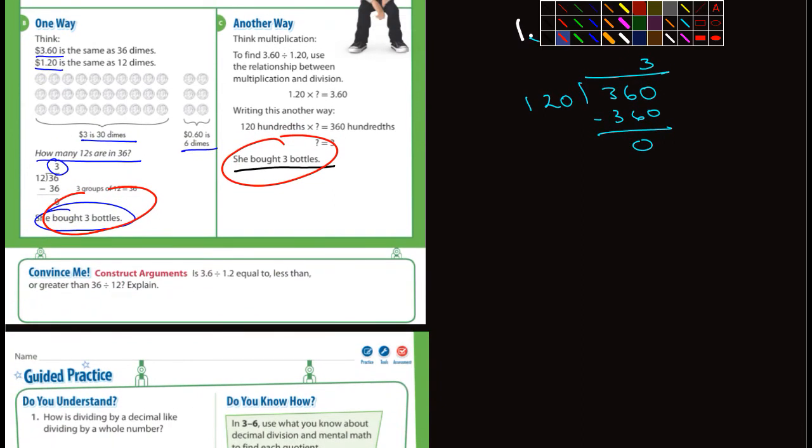Let's drop down to the convince me. It says construct arguments. Is 3.6 divided by 1.2 equal to, less than, or greater than 36 divided by 12? Well there's a couple different ways to look at this. So 3.6 divided by 1.2. Let me ask you what place is the three? That's the ones. What place is this one? It's in the ones. How many times do ones fit into three? Well there's three.